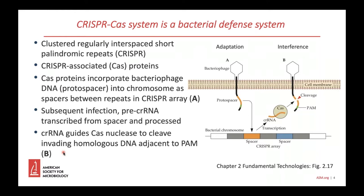The CRISPR-Cas system is a bacterial immune system that protects bacteria against bacteriophage infection and foreign DNA. The CRISPR acronym stands for Clustered Regularly Interspaced Short Palindromic Repeats, which refers to repeat sequences in a region of the bacterial chromosome known as the CRISPR array. Adjacent to these repeats are genes encoding CRISPR-associated proteins, or Cas proteins, that mediate the activity of the system.